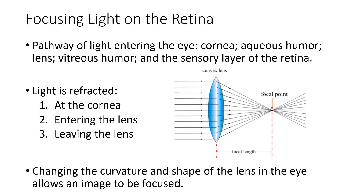Light is refracted along the way. The most important source of refraction is the lens itself, but refraction also occurs at the cornea — that happens in everyone. If you have a misshapen cornea, the light may be refracted there more than it should be and you won't form a proper image. That's known as astigmatism.